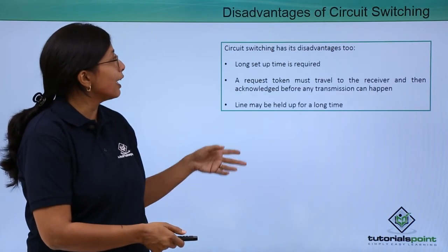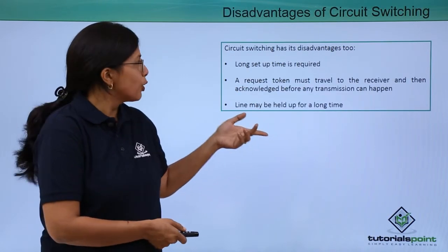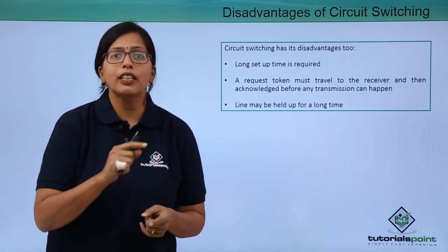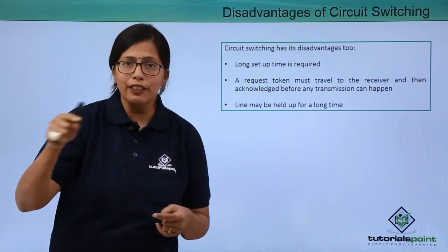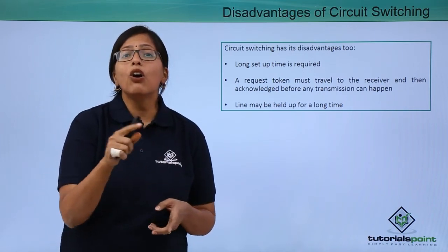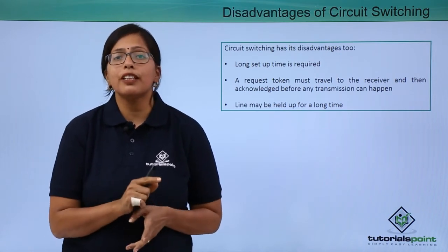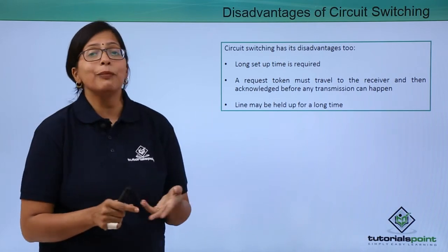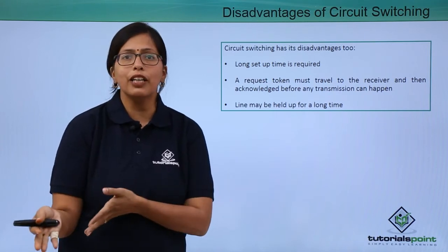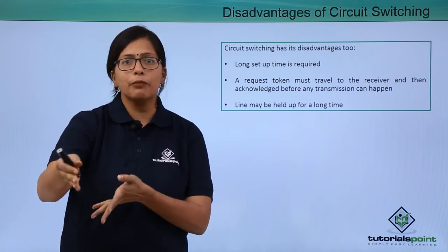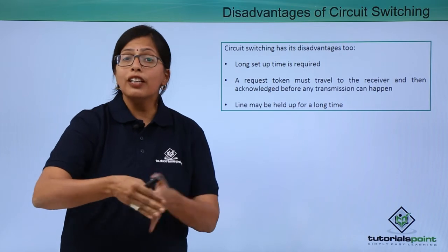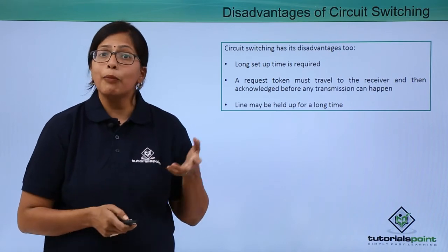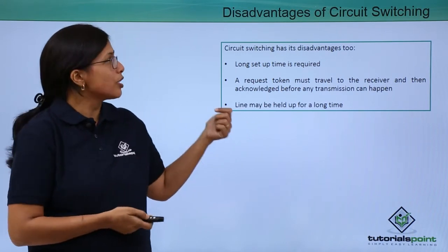But circuit switching has some disadvantages as well. The first is that the request token takes a long time traveling and coming back, so a long setup time is required for establishing the circuit. The second and most important disadvantage is that the line may be held up for a long time. If node 1 is communicating with node 2 and not releasing the path, that path cannot be used by any other message. That is the major disadvantage of circuit switching.